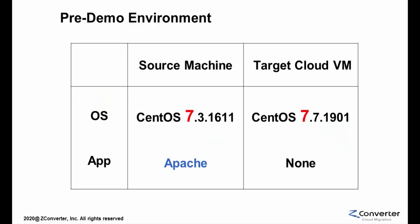As you can see in this demo, our source and target machines are running different minor versions of CentOS 7. The Apache web server is installed on the source machine only. We will show you that the Apache web server is migrated to the target OCI virtual machine at the completion of ZConverter cloud migration. The OCI target cloud virtual machine will be running the same CentOS 7.3.1611, which was originally the OS of the source machine, and the Apache web server will be migrated successfully.